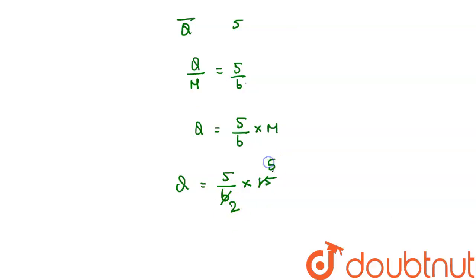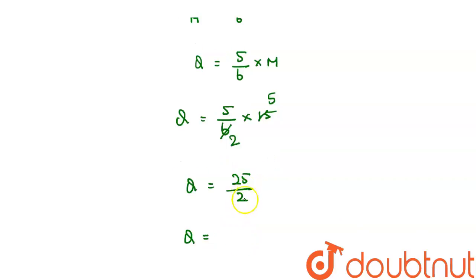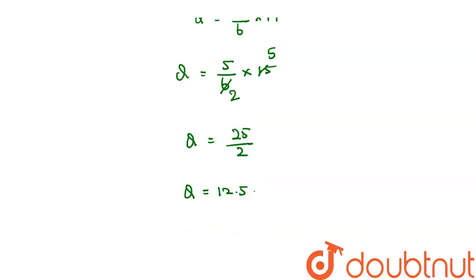So if we cancel this term, 2 threes are 6 and 5 threes are 15. So 5 times 5 is 25, right? So Q is equal to 25 divided by 2. We divide this term, the answer will be 12.5. So here, therefore, quartile deviation.